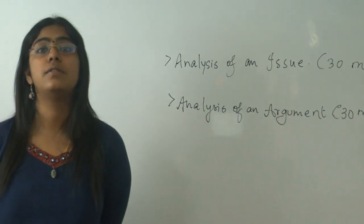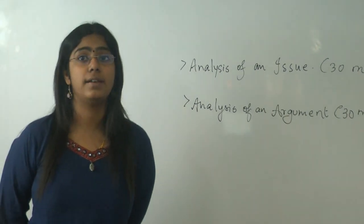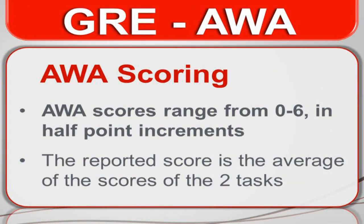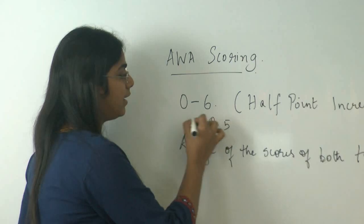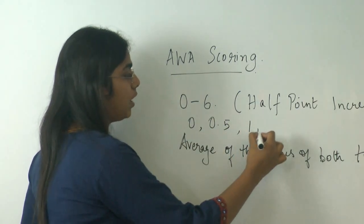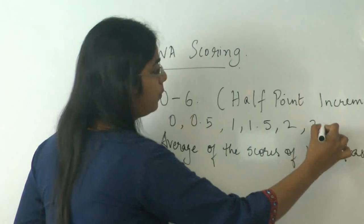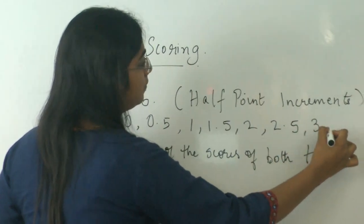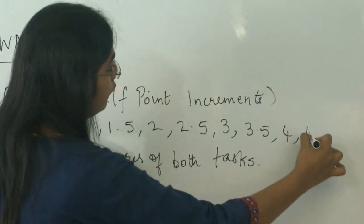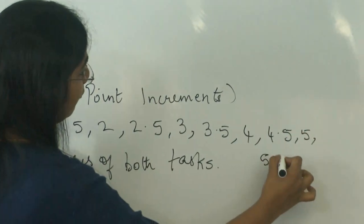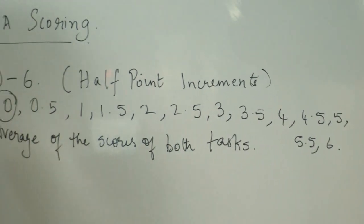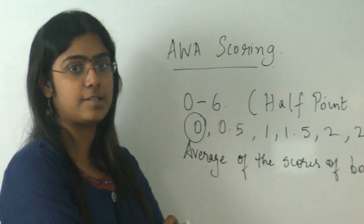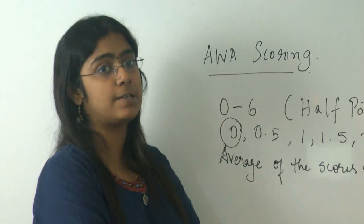Next we go on to see what the AWA scoring is all about. AWA scores range from 0 to 6 in half point increments. That means that your scores typically are 0, 0.5, 1, 1.5, 2, 2.5, 3, 3.5, 4, 4.5, 5, 5.5 and 6. So 0 is the worst score possible and 6 is the best score possible.